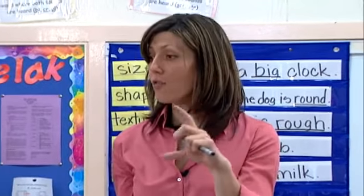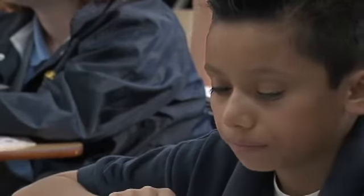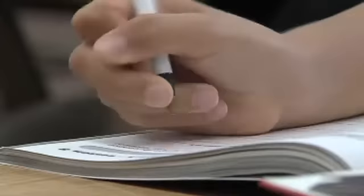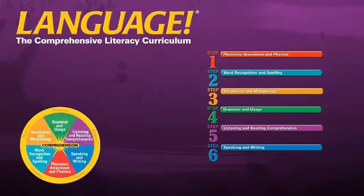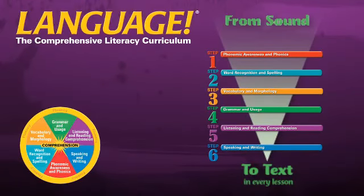Another way that Language develops comprehension and writing skills is through activities designed to help students read, select information, record the information, and use the information to write paragraphs or reports. The goal is for students to see the relationship between what they are reading and getting organized to write. The power of Language lies in these steps from sound to text. Each step contributes to the literacy foundation students need to become successful readers and writers.